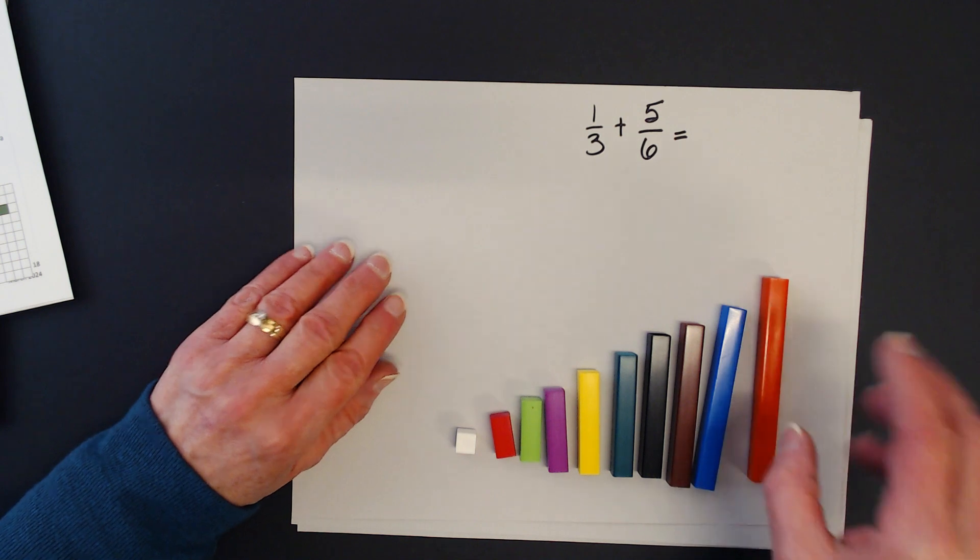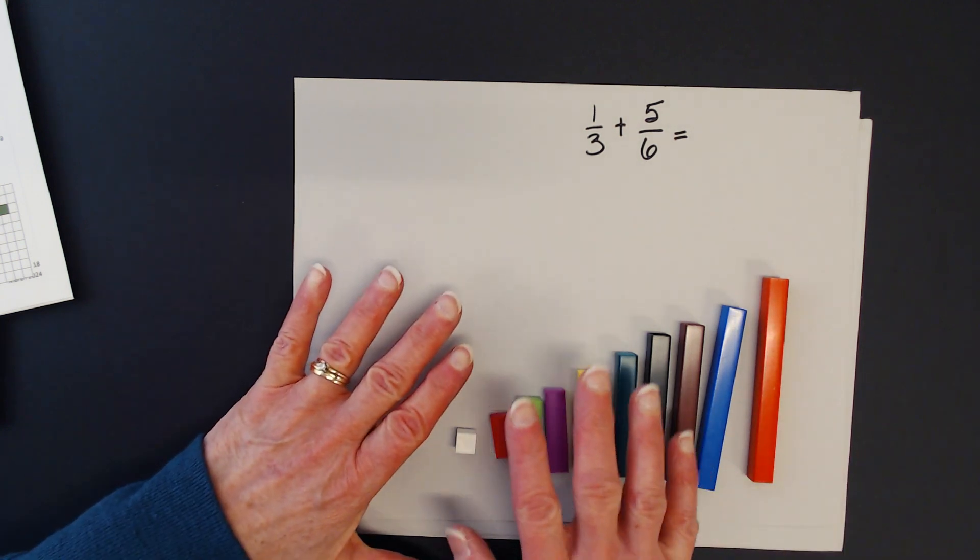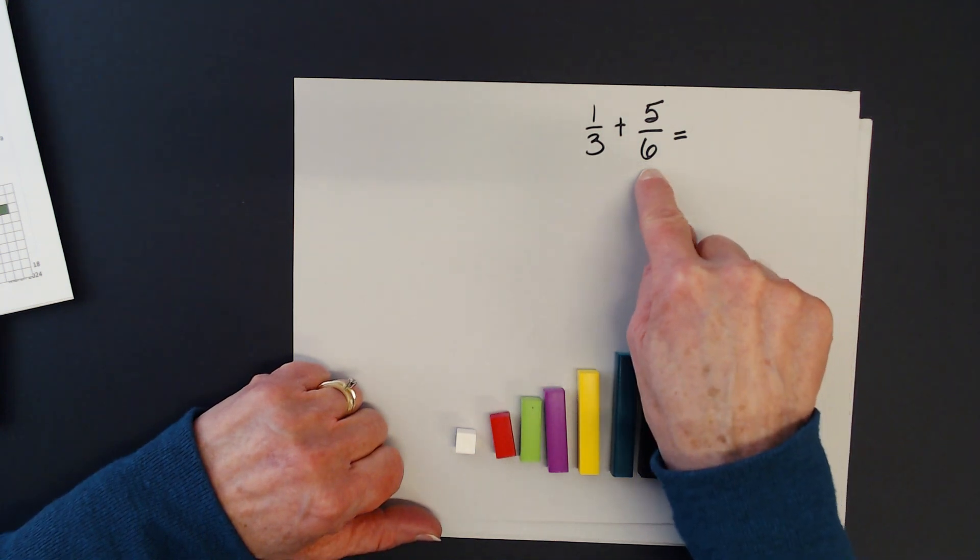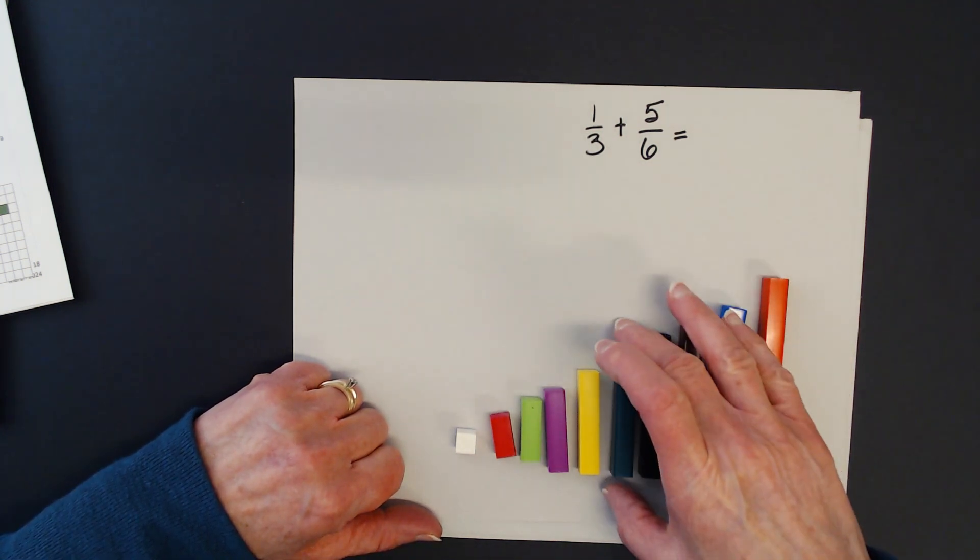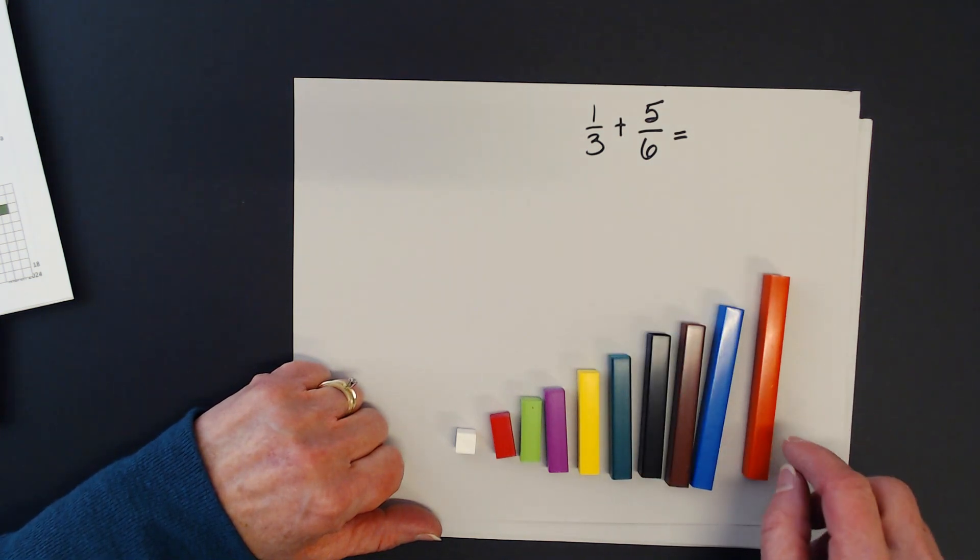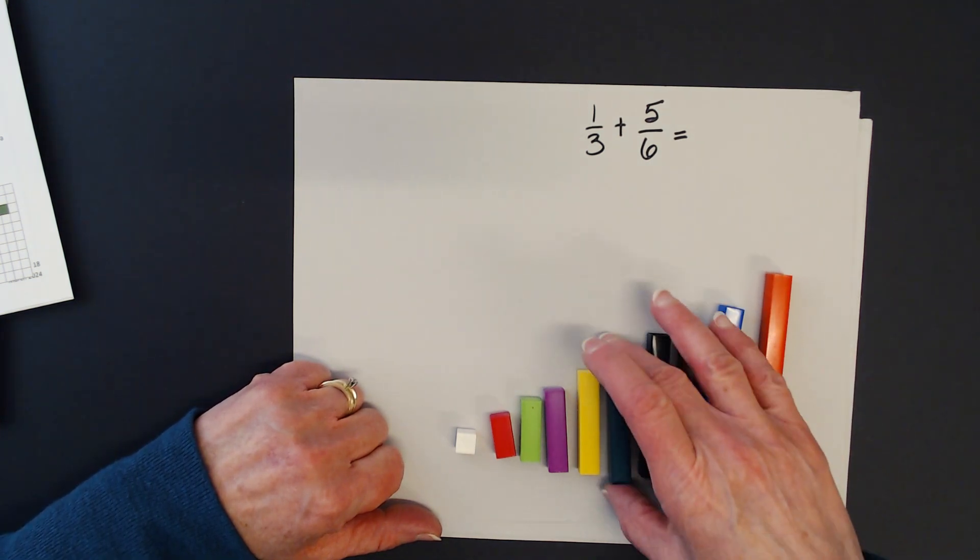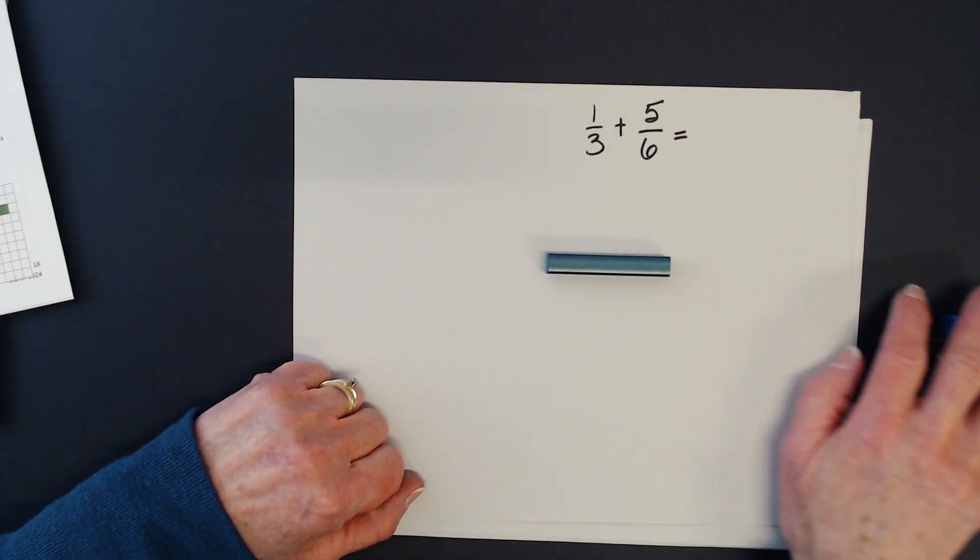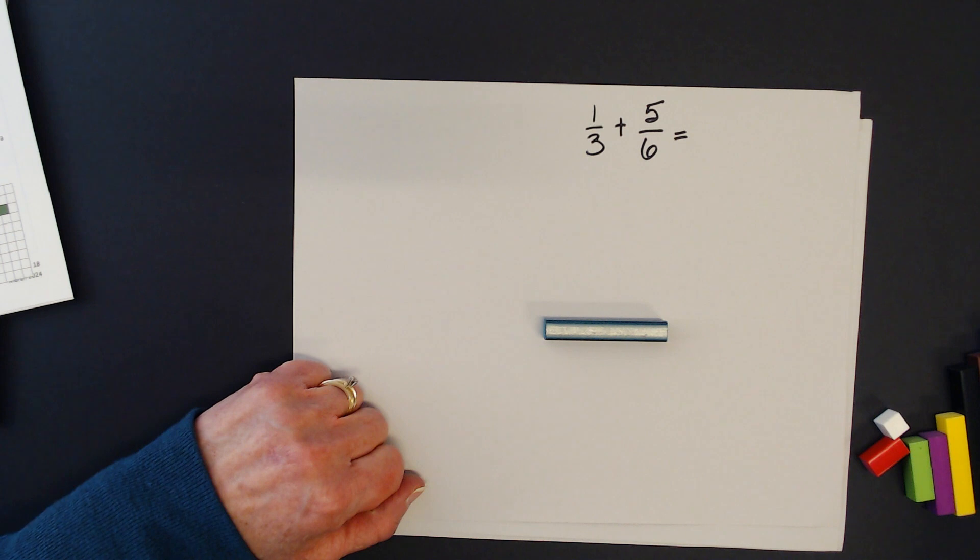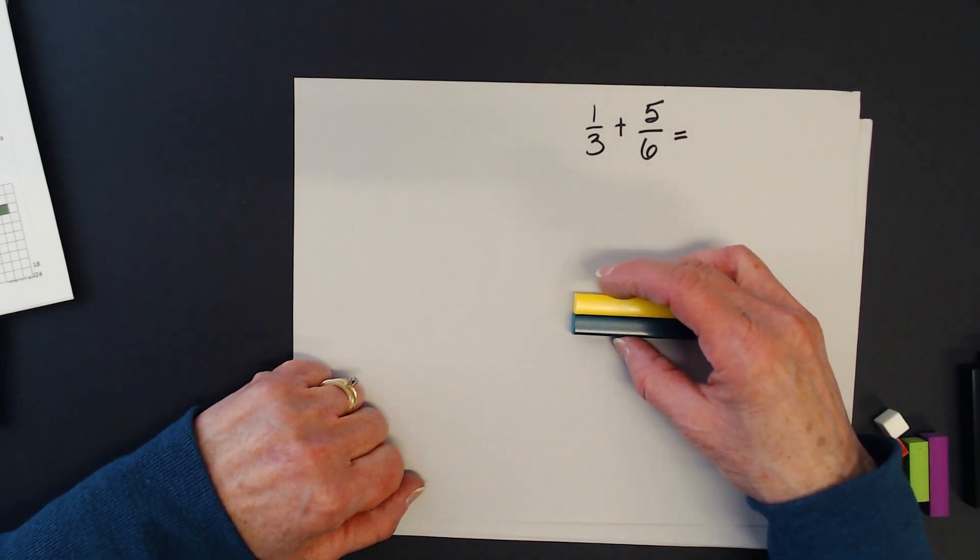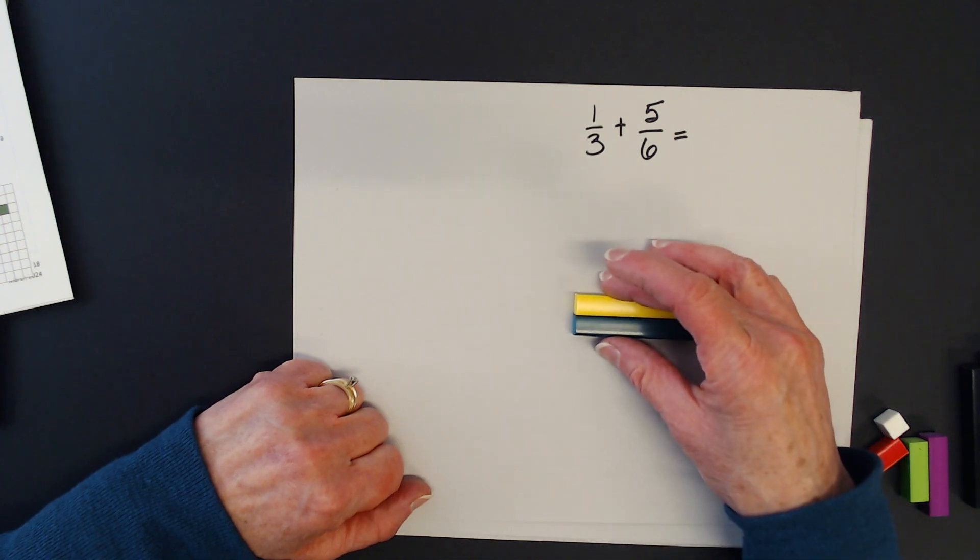What we want to do first is we want to represent these two fractions. I'm going to take a look at this one that says 5/6. And if this has a value of 10, this one has a value of 6. So what I'm going to do is I want to represent 5/6. And that's what I have here. I have 5/6.